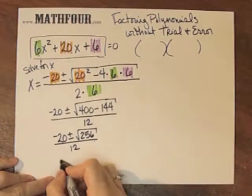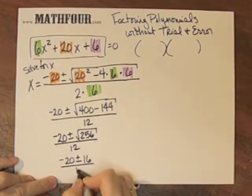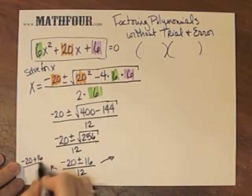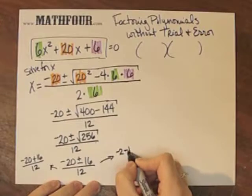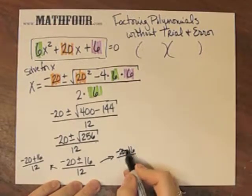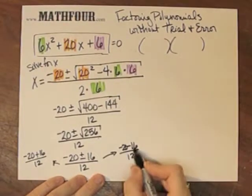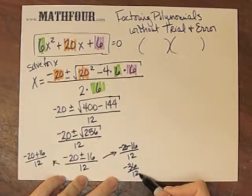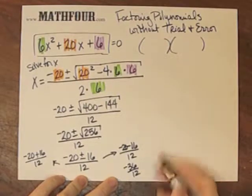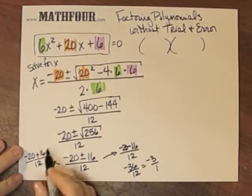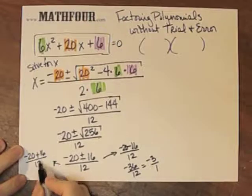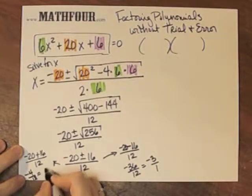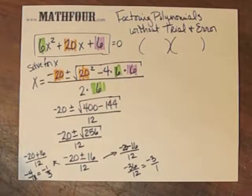The square root of 256 is 16. So I have negative 20 plus or minus 16 over 12. Now I can go in both directions. So I have negative 20 plus 16 over 12, and negative 20 minus 16 over 12. Let me do this one first. Negative 20 minus 16 over 12 is negative 36 over 12. You can reduce this to 18 over 6, which is 3 over 1. So this is negative 3 over 1.